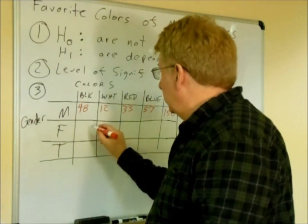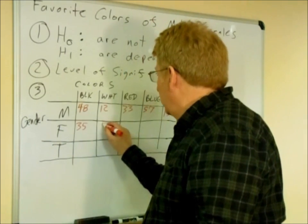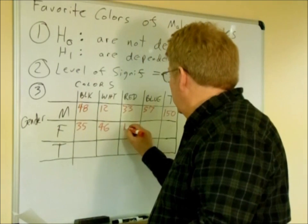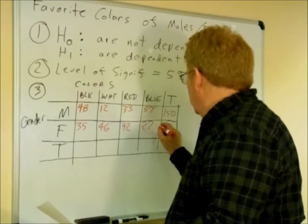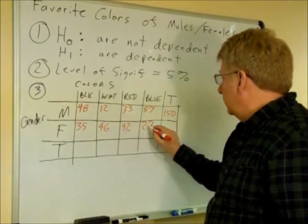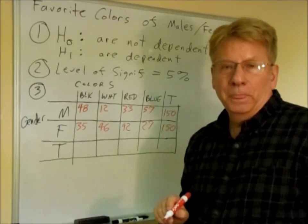And then for females, we're going to use the 35 prefer black, 46 white, 42 red, and 27 blue. And if we add up these numbers, we come up with a total of 150 across that row.